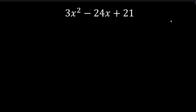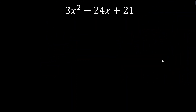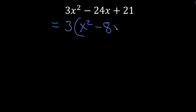Let's try our next example. Again, first thing: looking for a greatest common factor. In this case I think there is one — all terms are divisible by 3: 3 times 8 is 24, 3 times 7 is 21, 3 times 1 is 3. So let's factor out the 3. What do I multiply 3 by to get negative 24? That's negative 8. Or equivalently, negative 24 divided by 3 is negative 8. Then plus 7. So we've factored out a 3 and we're left with 3(x² − 8x + 7).